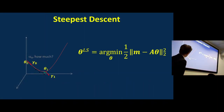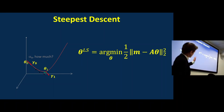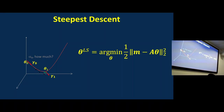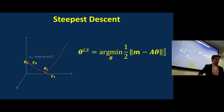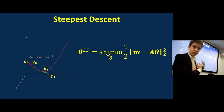What we're going to do is find a least squares estimate of a vector of parameters theta — grayscale values for an image — find the theta that minimizes the discrepancy between my model of the data, A theta, and what I actually measured, m. So this is just an L2 norm. That's the least squares cost function or objective function.